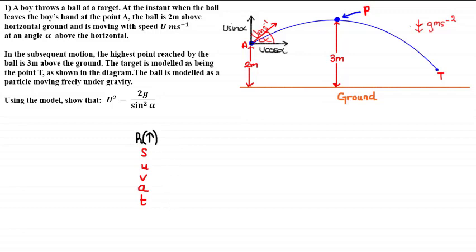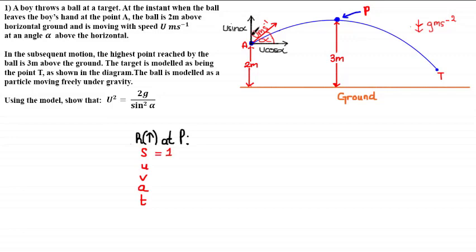Let's consider the vertical motion of this particle at P, taking upwards as positive and downwards as negative. What is s, the vertical displacement? Since point P is three meters above the ground and the initial point of projection A is two meters above the ground, the vertical displacement is simply the vertical distance between A and P, which is three minus two, equal to one meter. Another way to think about it: if you take A as the origin of an x-y axis, the y-coordinate of P relative to the origin is one.